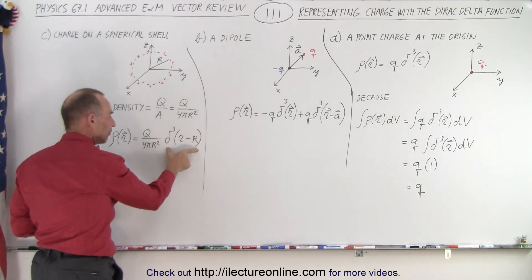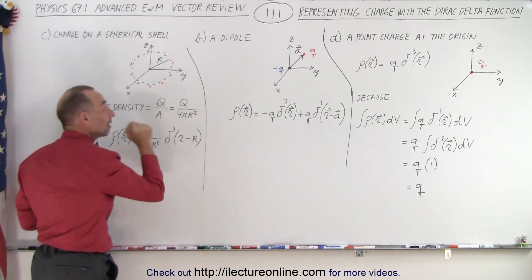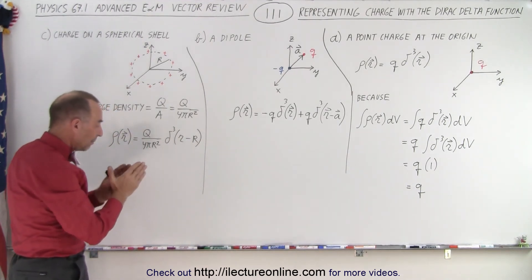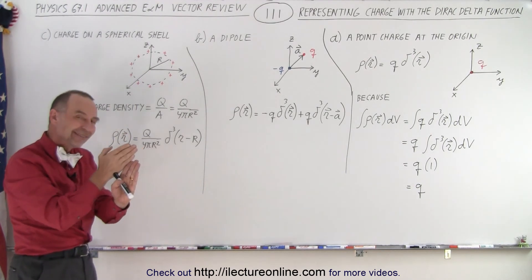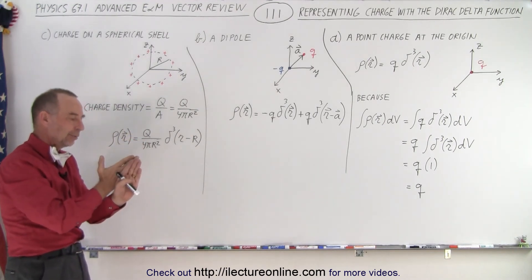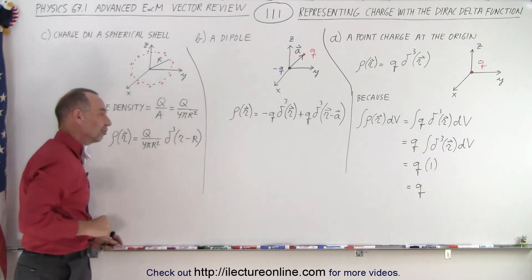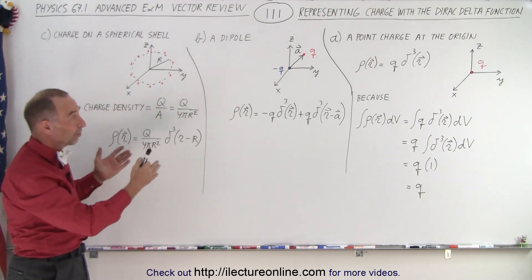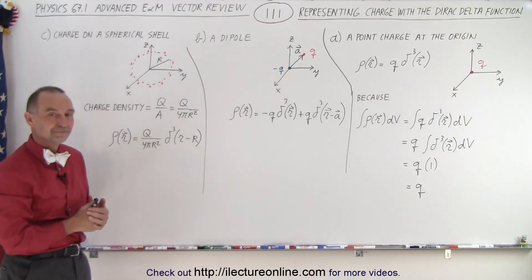We use the Dirac delta function in three dimensions to put the charge at a distance R away from the origin. It only exists at exactly the distance R — not beyond it, not anywhere closer — and it's infinitesimally thin, which is why the Dirac delta function is perfect for this representation. And that's a good way to represent the three forms of charges illustrated here.